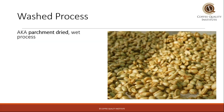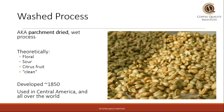We're going to go through each of these. First, the wash process. This is also known as parchment-dried or the wet process. The flavor profile for this is theoretically floral, sour, citrus fruit, and people refer to it as clean tasting. This process was developed in the 1850s during the Industrial Revolution, developed in the Caribbean and popularized in Central America to handle higher volumes of coffee. Now it's used all over the world.